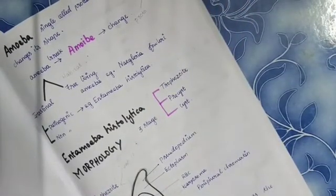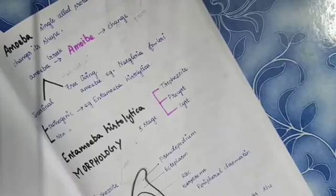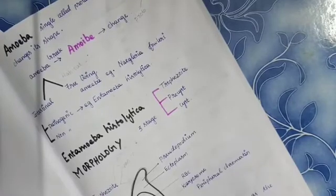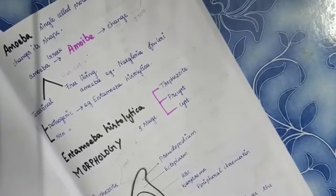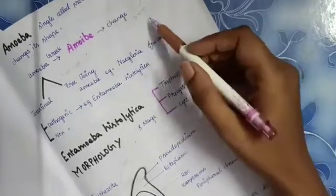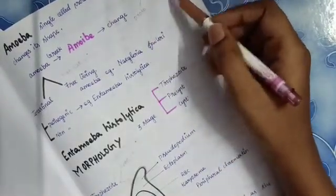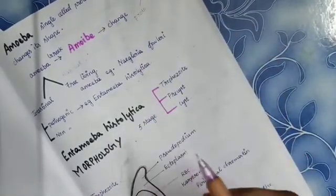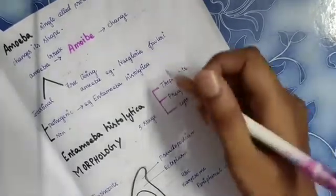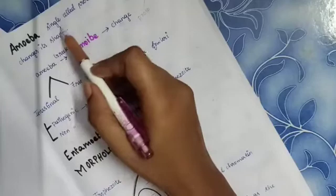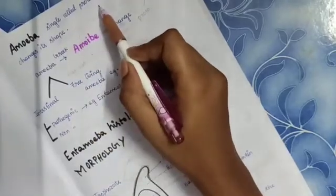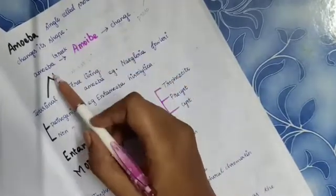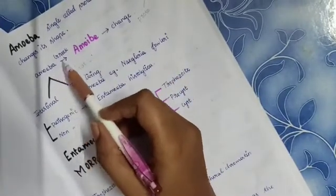These category of organisms are placed under parasite. Parasites are divided into two: protozoan and helminthus. Under protozoan, the Entamoeba histolytica plays a major role as pathogenic amoeba. It is a single-celled protozoan. It can constantly change its shape.